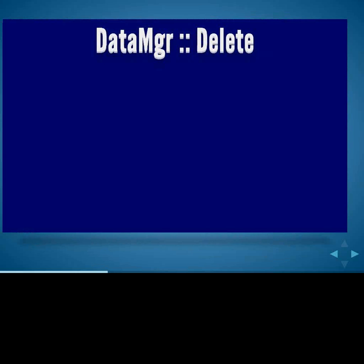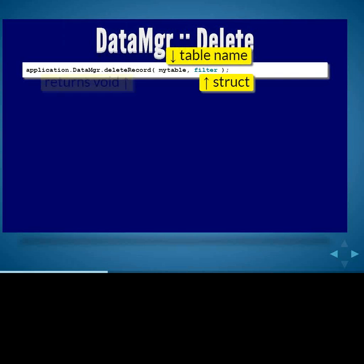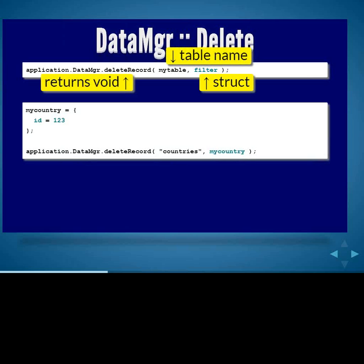Looking at the delete method — it deletes one record at a time from the database. It takes a table name and filter, and returns void. Passing it in is as simple as providing the struct with the country ID, and it will go off and delete that record. If you don't pass the primary key, you will get an error. If you pass a struct with more keys, it will just ignore the other keys and look for the key that matches the column name in the table — so if your primary key field is called countries_PK, you'd pass in countries_PK equals 123.